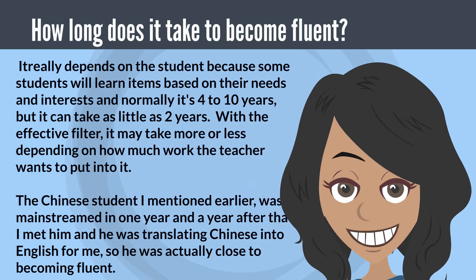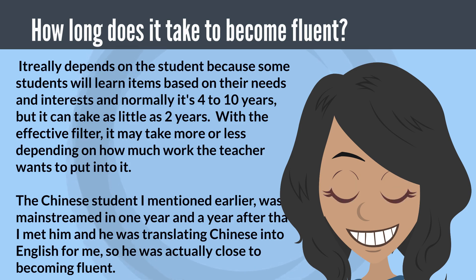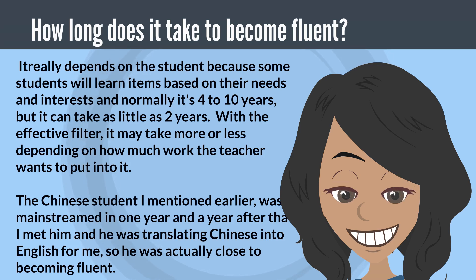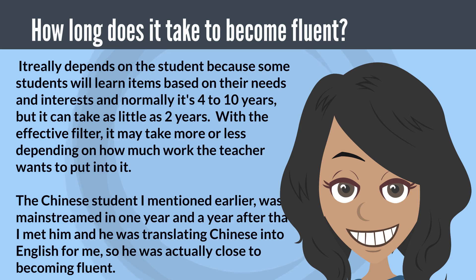How long does it take to become fluent? It really depends on the student, because some students will learn based on their needs and interests. Normally it's 4 to 10 years, but it can take as little as 2 years. With the affective filter, it may take more or less depending on how much work the teacher puts in. The Chinese student I mentioned earlier was mainstreamed in one year, and a year after that I met him and he was translating Chinese into English for me — so he was close to becoming fluent.